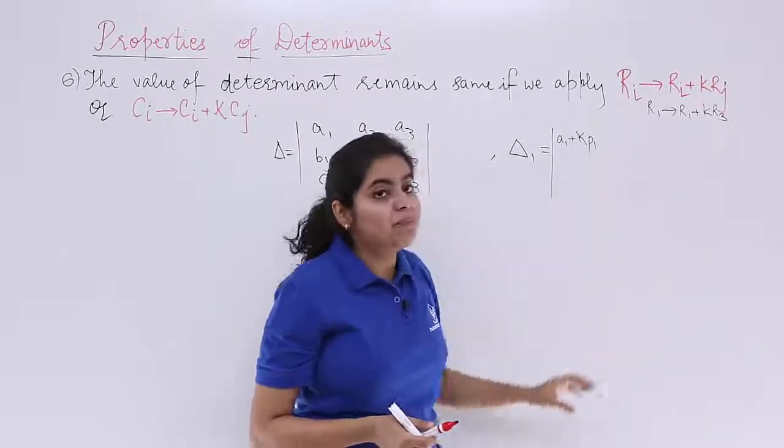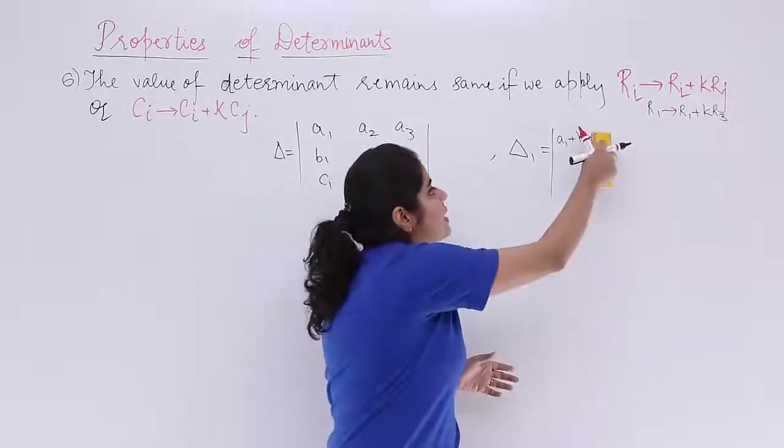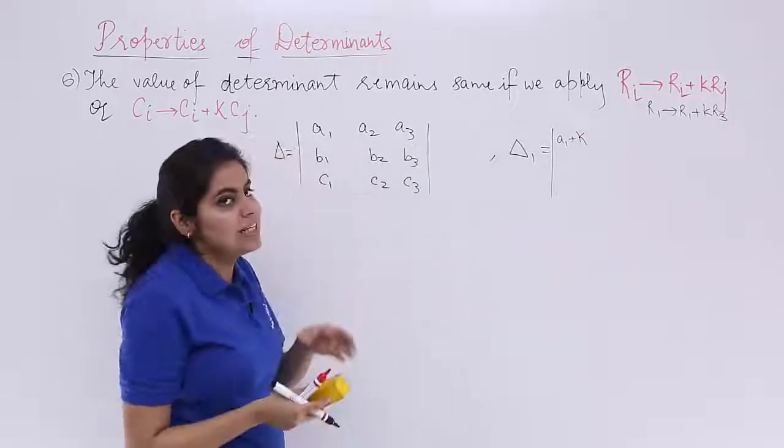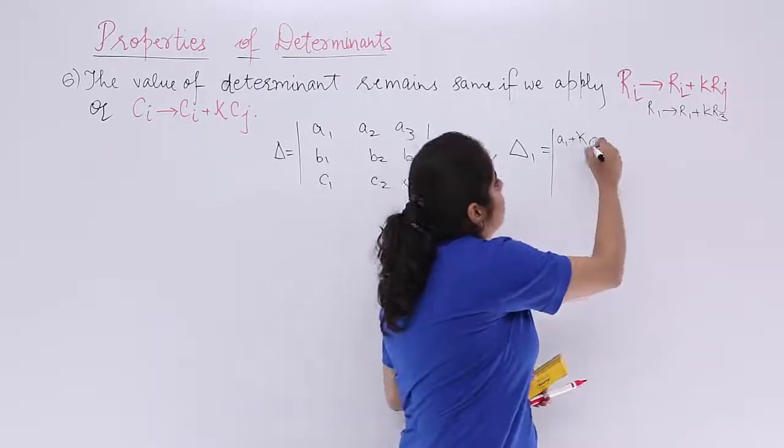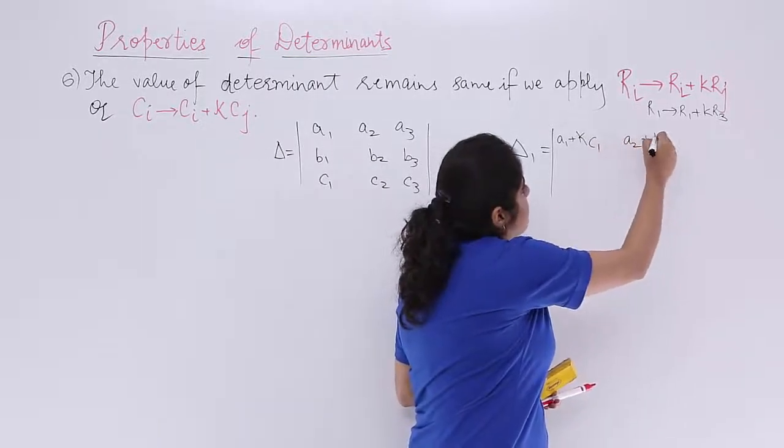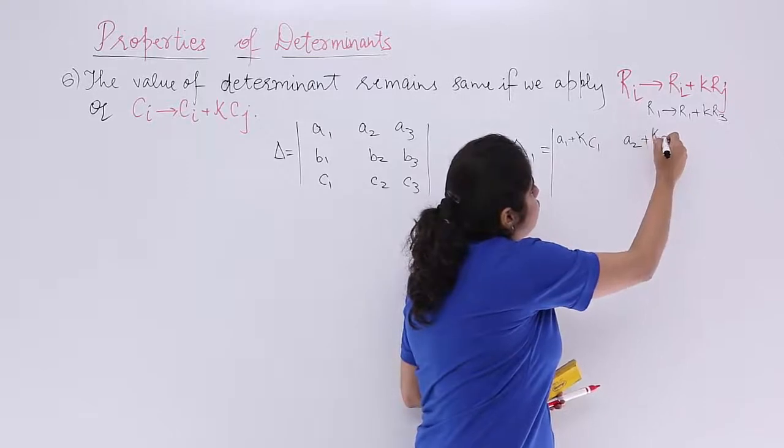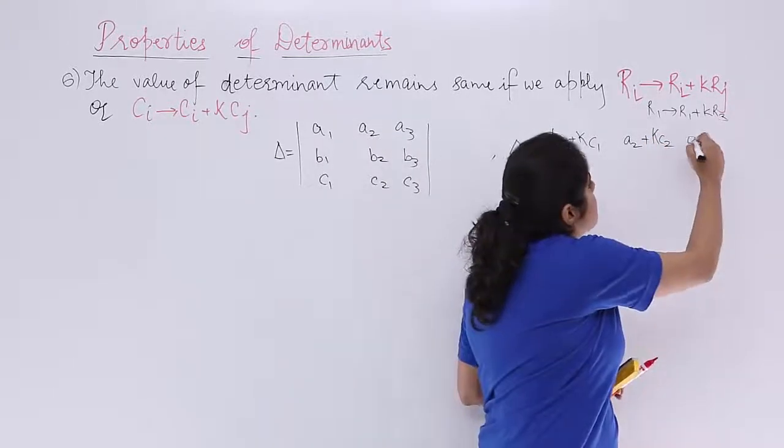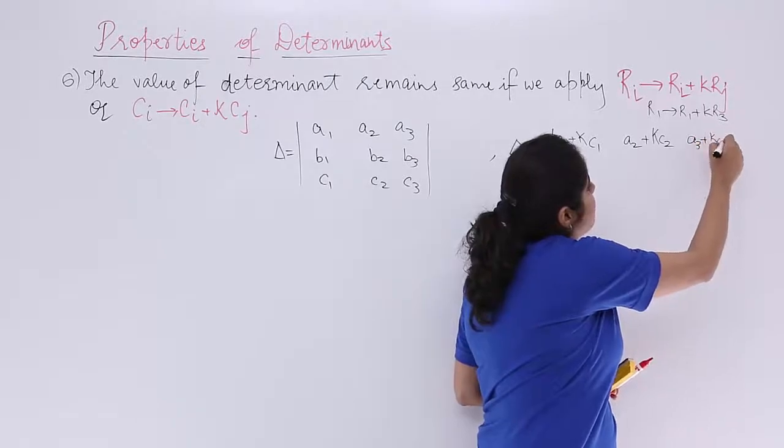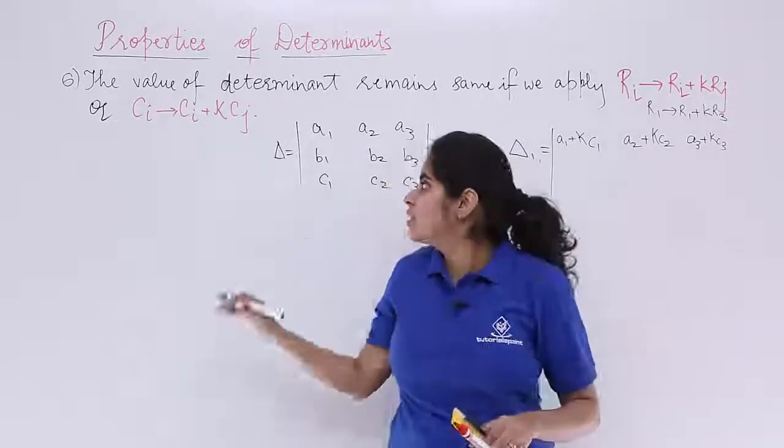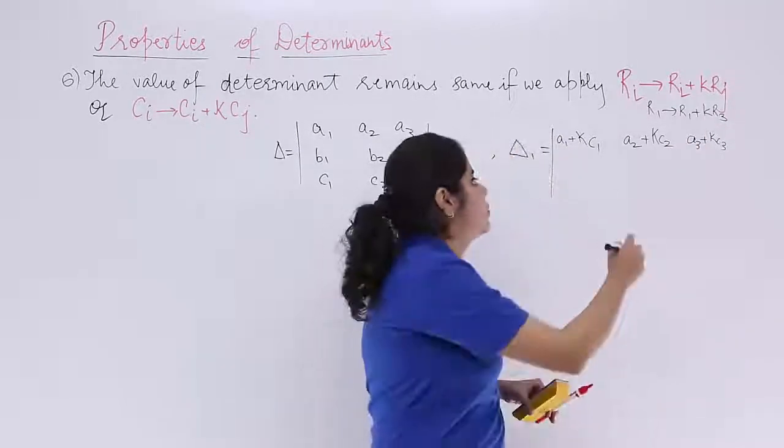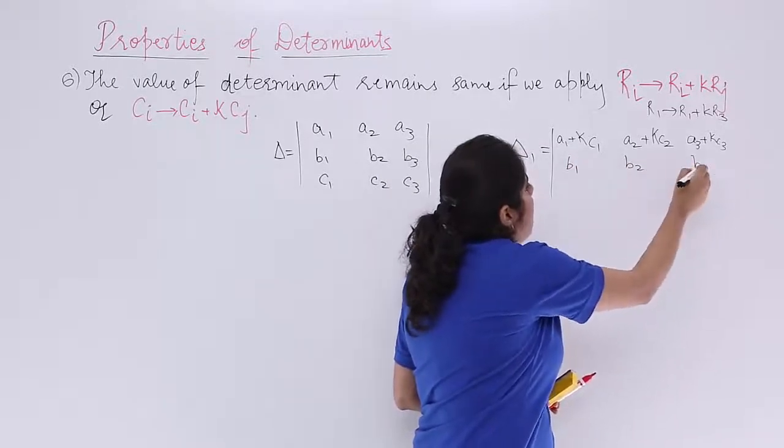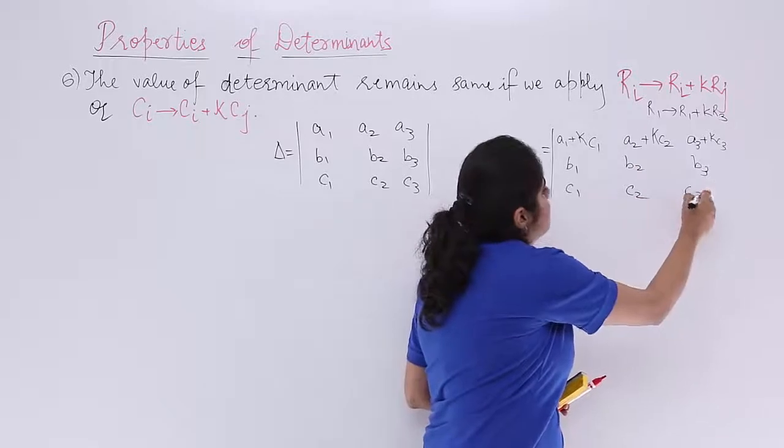Right? So it is k p1. No, not p1 in this case. We are applying on R3. So R3 is basically your c. So it has to be c1. Then a2 plus k c2. Now I hope you are observing and following. It is a3 plus k c3. Right? Next, no changes in other rows. b1, b2, b3. And here it is c1, c2, c3.